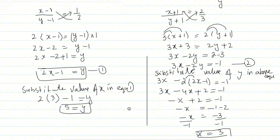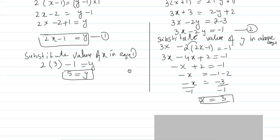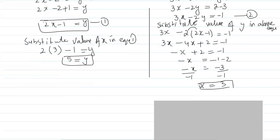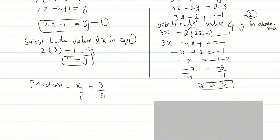Our fraction is x/y. Since x = 3 and y = 5, the fraction is 3/5. That is our answer: 3 over 5. Thank you.